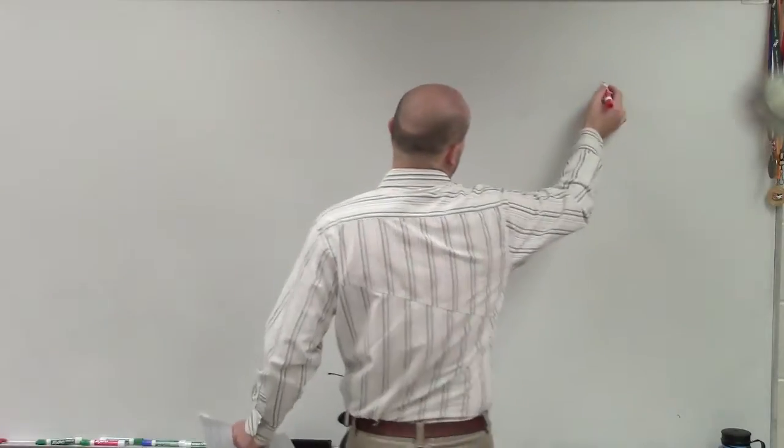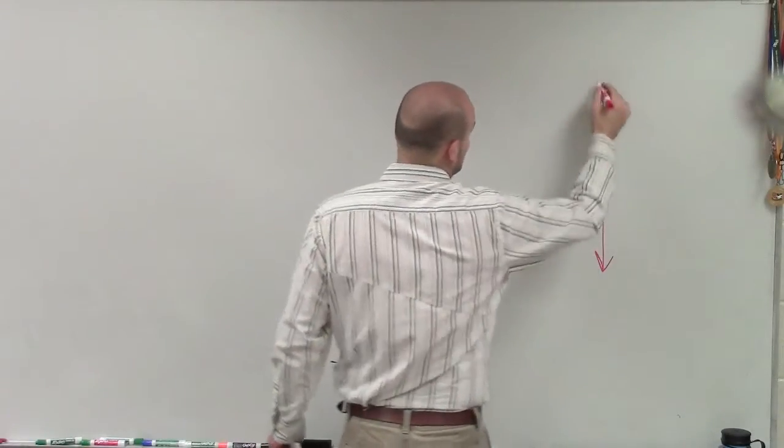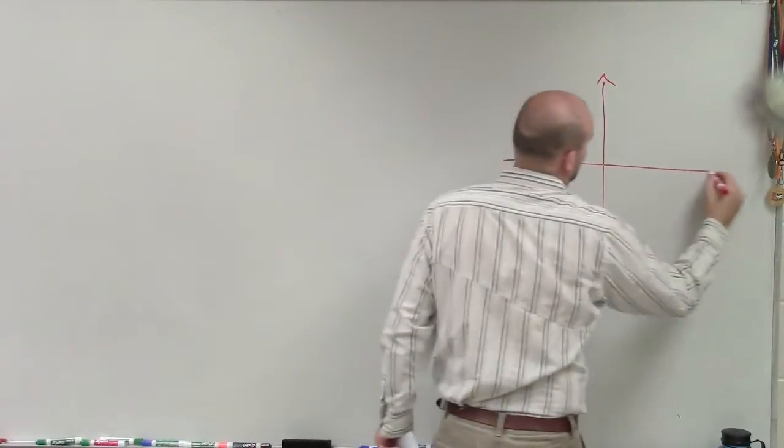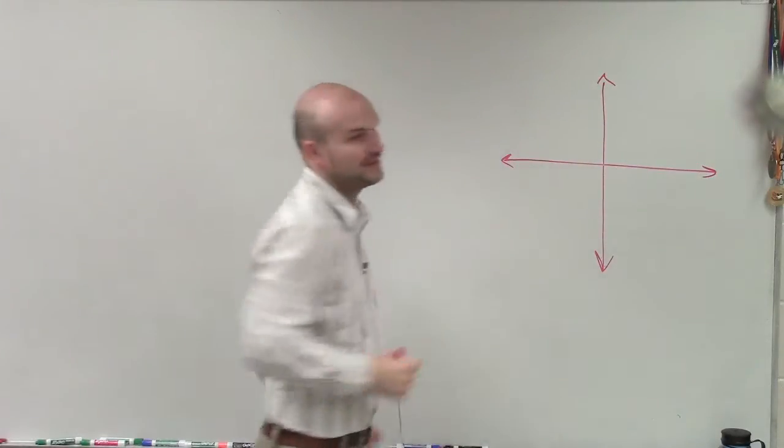So we have Laura's house is 10 miles west of Katie's and Jennifer's is 6 miles south of Laura's. So the first important thing we need to do is draw a nice little directional map here.